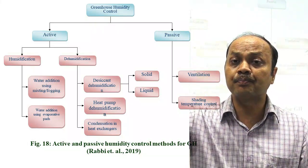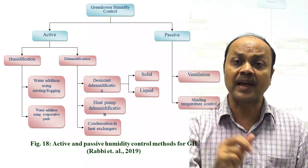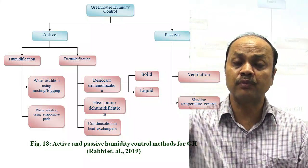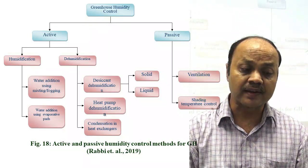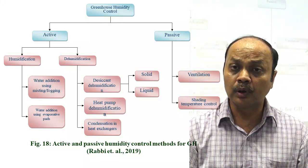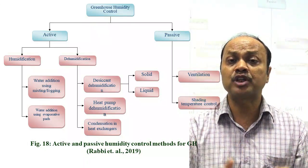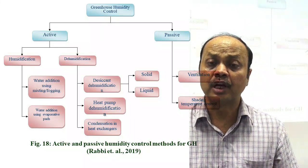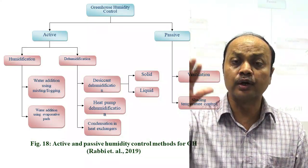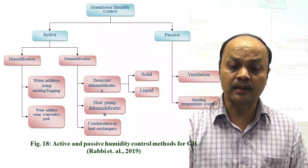If relative humidity is low and you want to increase it, that is humidification. If relative humidity is very high — say 90% — and you want to reduce it, that is dehumidification. Suppose you are using misting or fogging inside the greenhouse — that adds water vapor inside. Similarly, using a cooler in summer adds moisture inside the room, increasing relative humidity.